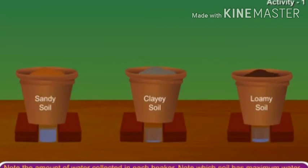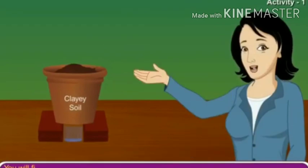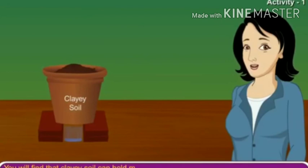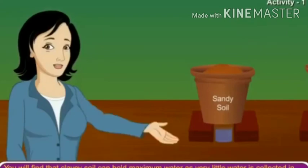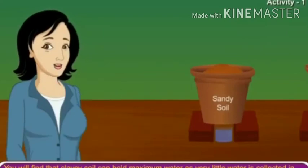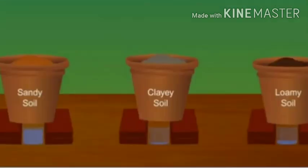Note which soil has the maximum water holding capacity. You will find that clayey soil can hold maximum water, as very little water is collected in the beaker. Sandy soil holds minimum water, as much water is collected in the beaker. The three types of soils are from the paddy field, from the garden with more sand, and from a construction site.